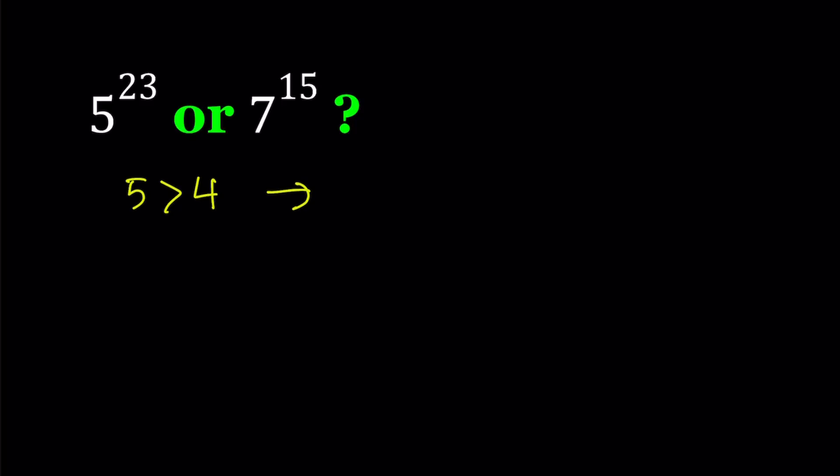That implies if you raise both sides to the power 23, 5 to the power 23 is greater than 4 to the power 23. Now, we can write 4 as 2 squared and then it's raised to the power 23. And now, by power of power, we get 2 to the power 46 because we're supposed to multiply the exponents.